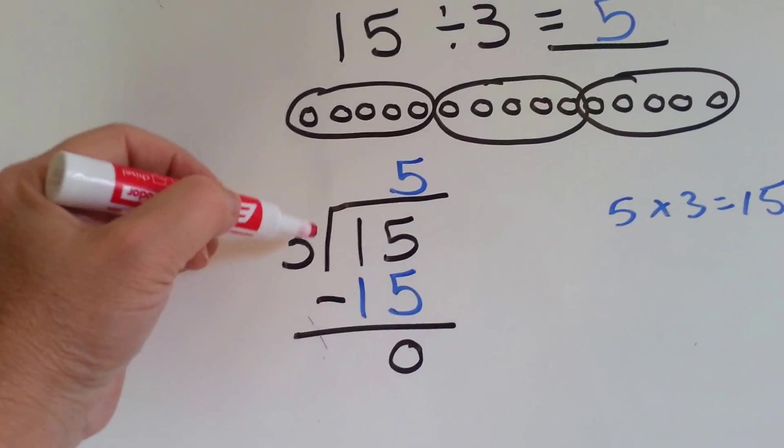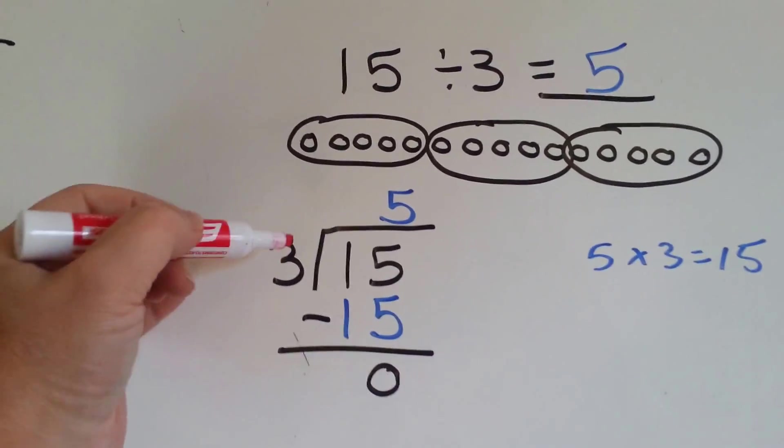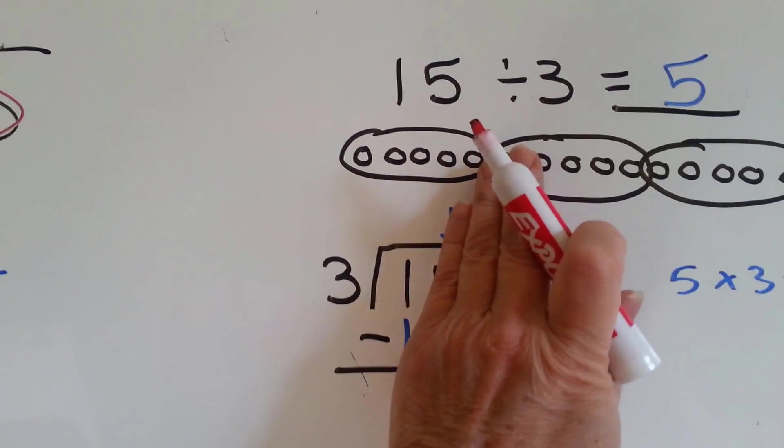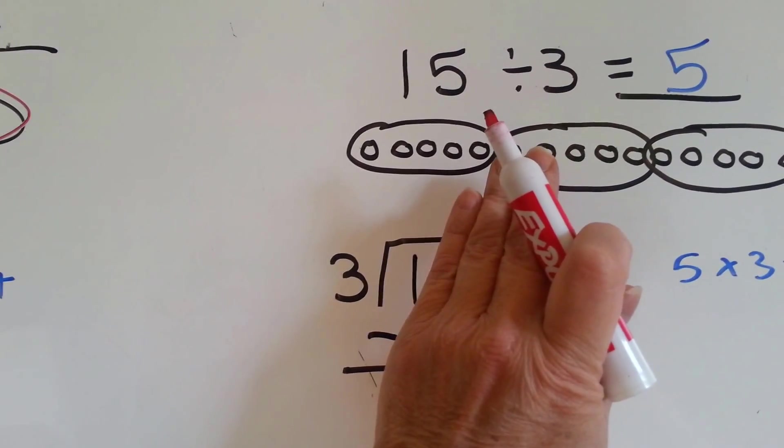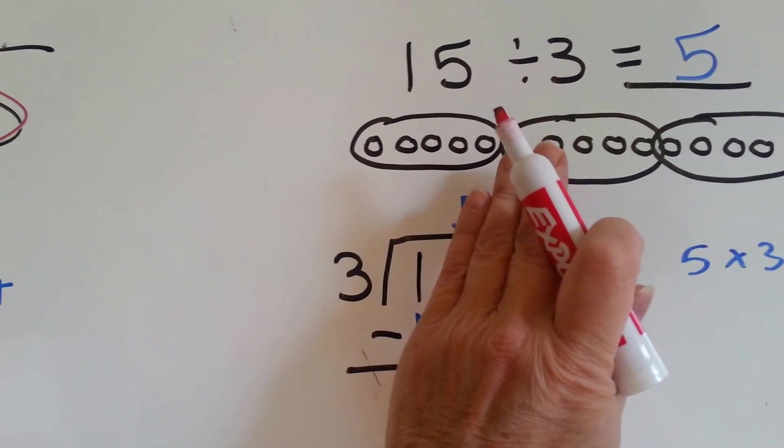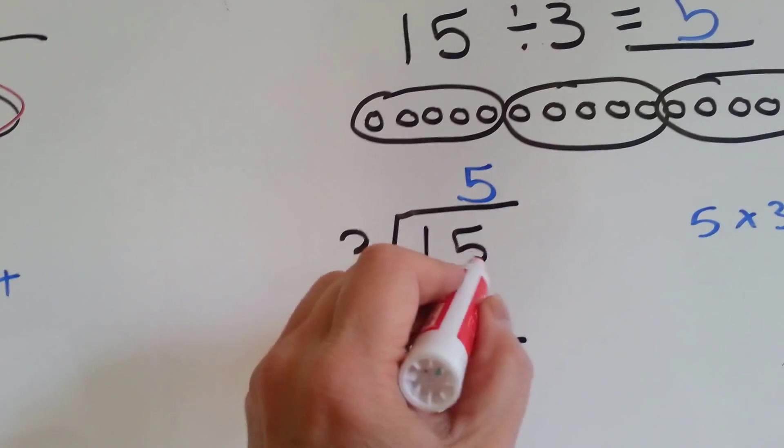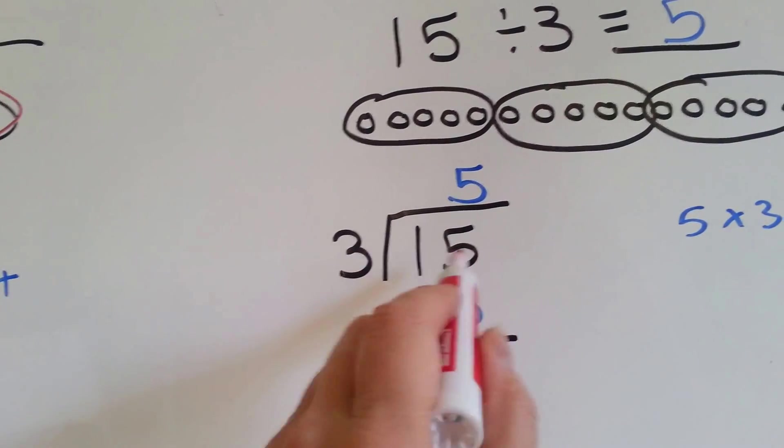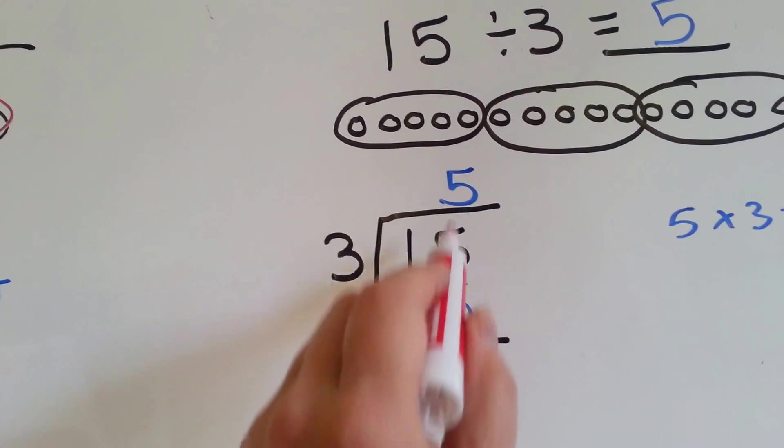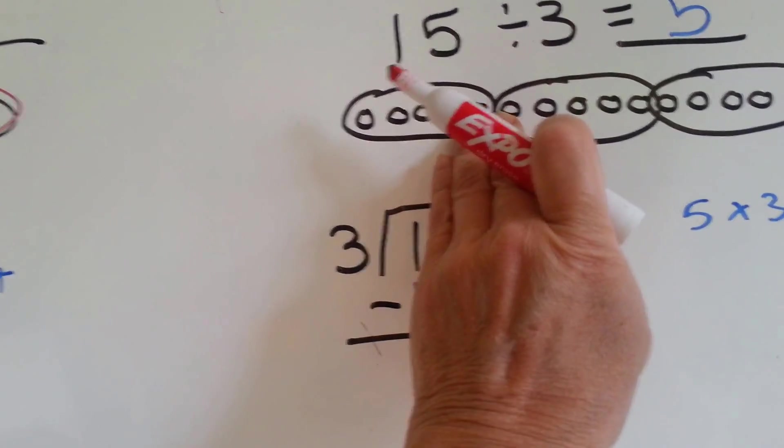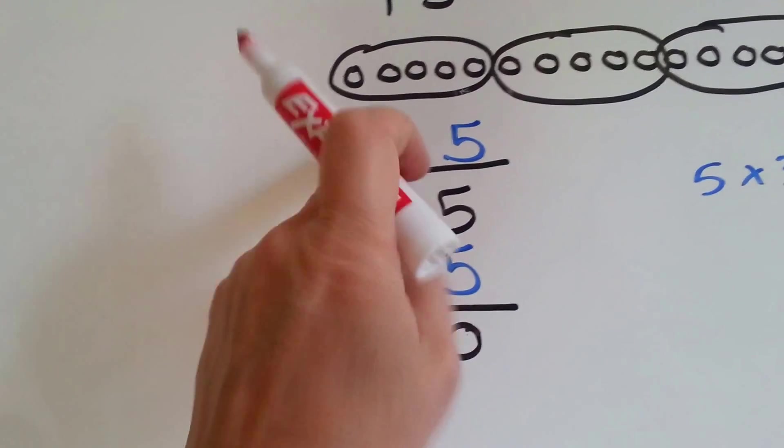Let me explain it a better way. Can 3 go into 1? No. You can't put 3 inside of a 1, but can you put 3 inside of a 15? Yes. So because we had to use the entire 15, the answer goes above the 5. If we could have fit it in a 1, then the answer would have gone up here.